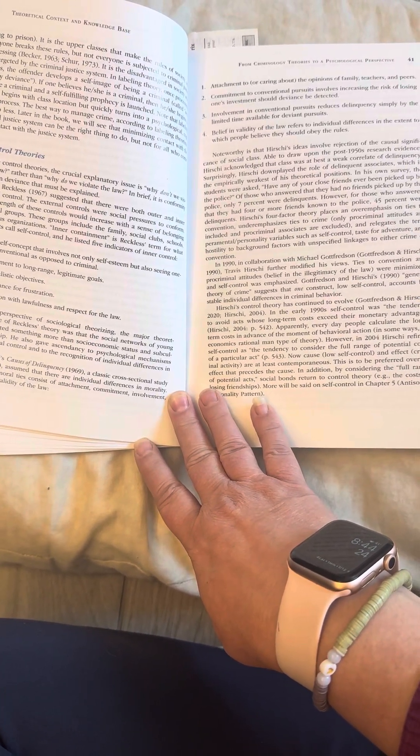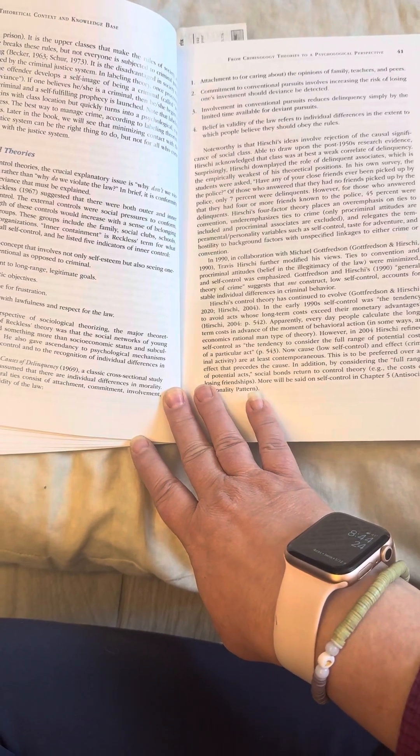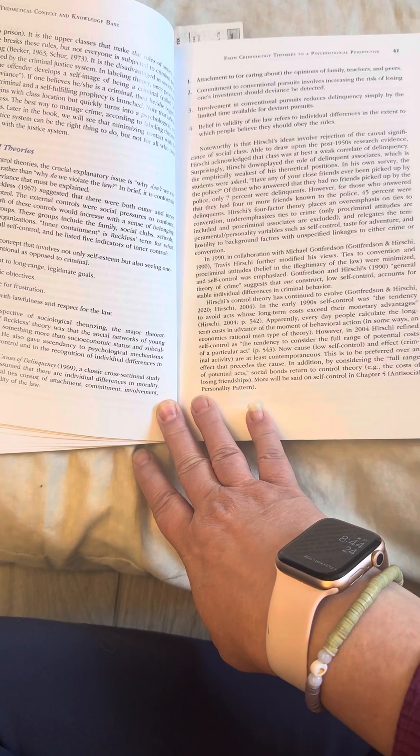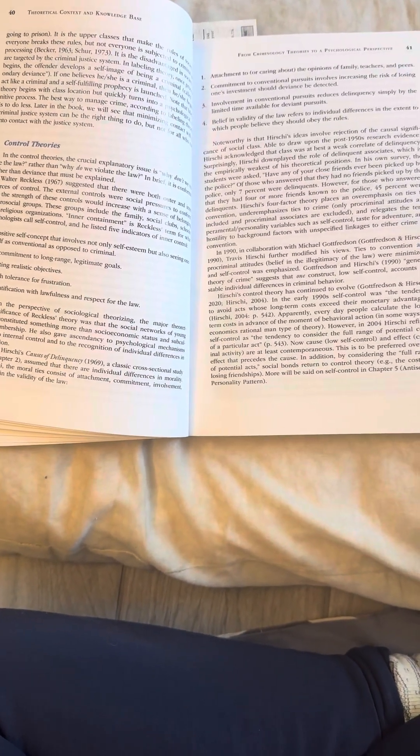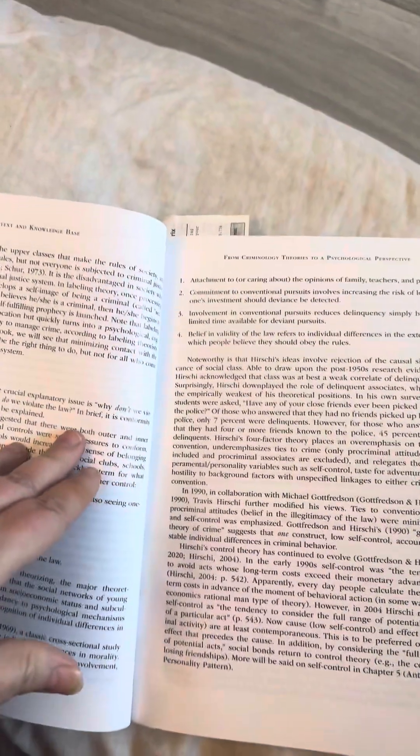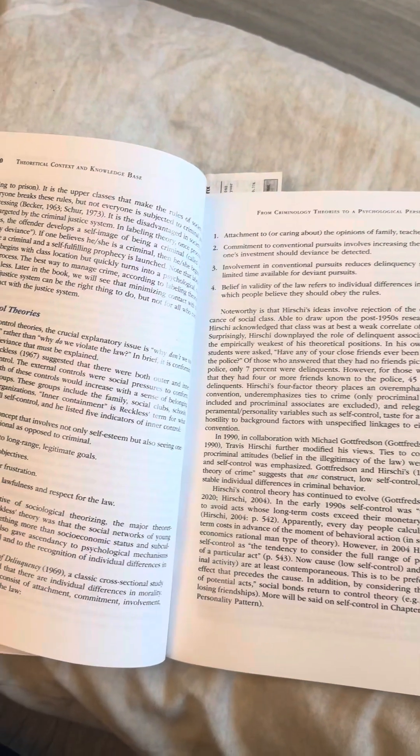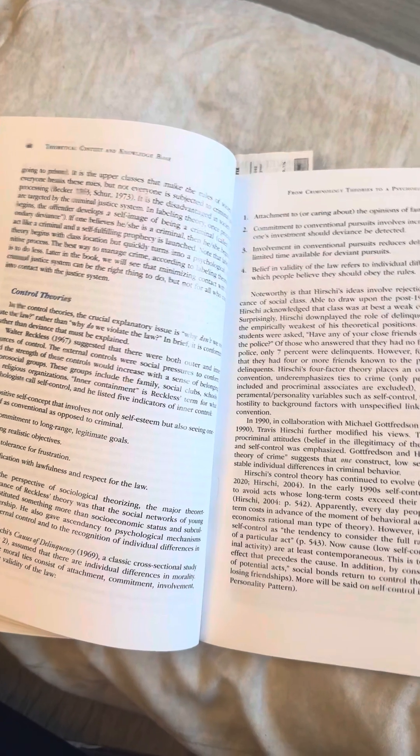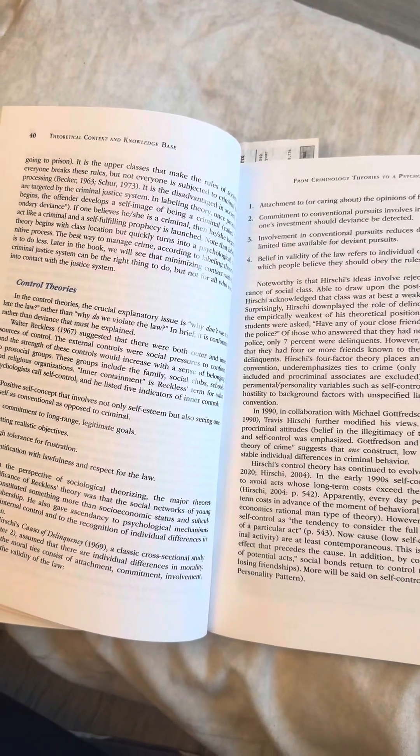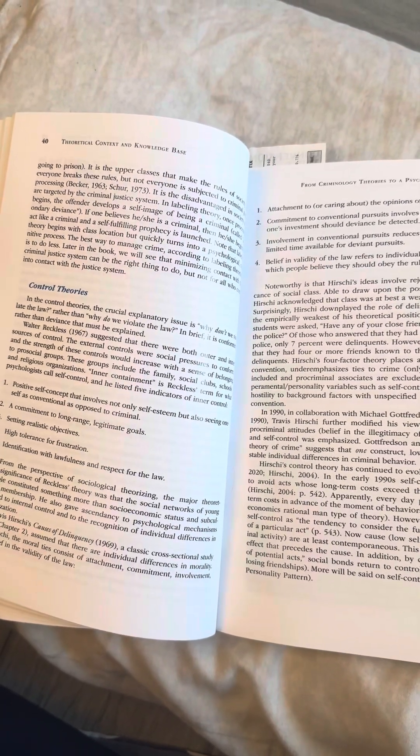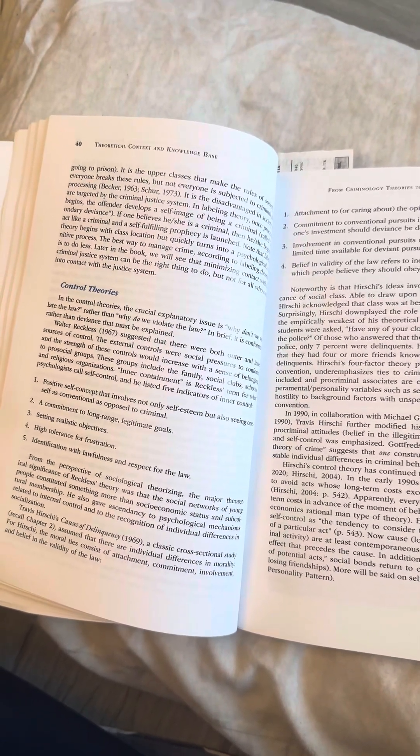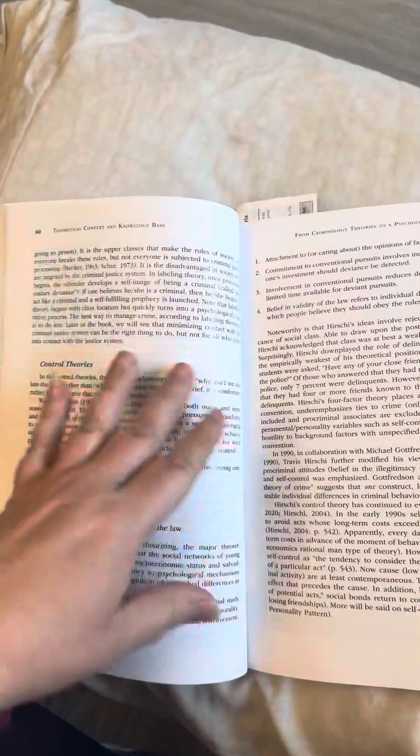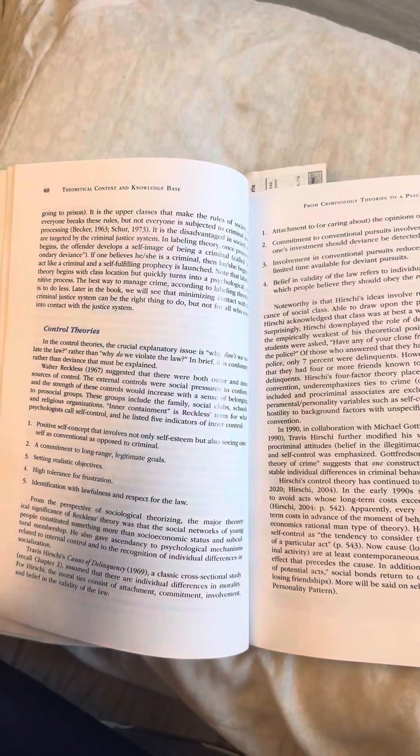Travis Hirschi's Causes of Delinquency, 1969, a class cross-sectional study, recall chapter two, assumed that there are individual differences in morality. For Hirschi, the moral ties consist of attachment, commitment, involvement, and belief in the validity of the law. One, attachment to or caring about the opinions of family, teachers, and peers. Two, commitment to conventional pursuits involves increasing the risk of losing one's investment should deviance be detected. Three, involvement in conventional pursuits reduces delinquency simply by the limited time available for deviant pursuits. Four, belief in validity of the law refers to individual differences in the extent to which people believe they should obey the rules.